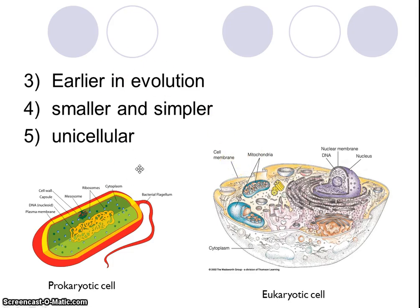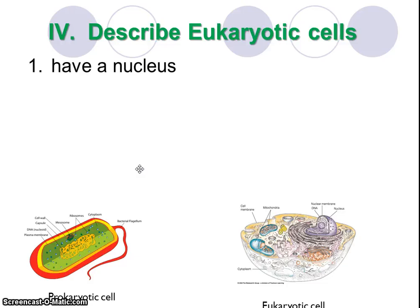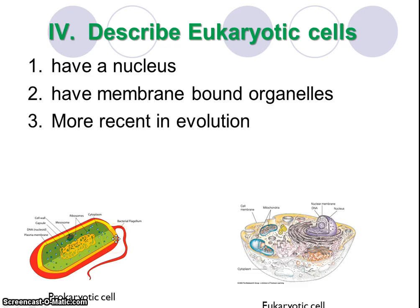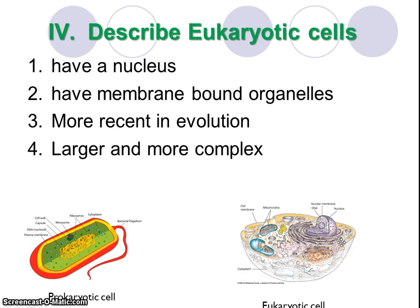Eukaryotic cells, on the other hand, do have a nucleus surrounding their DNA. They do have membrane-bound organelles. It's actually theorized, with a good bit of evidence, that maybe a prokaryote was the origination of these membrane-bound organelles, because the mitochondria looks kind of like a prokaryotic cell. They are more recent in time evolutionarily, and they are larger and more complex — pretty much the opposites of what we said about prokaryotes.